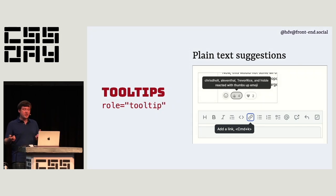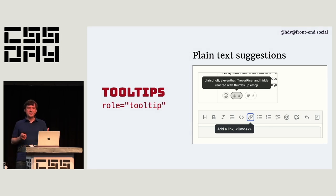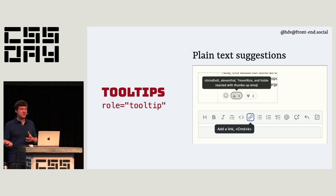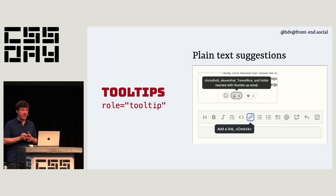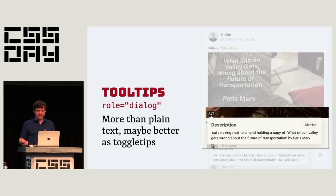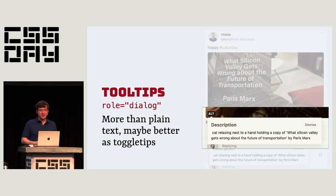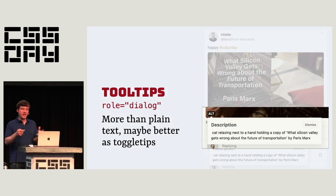The fourth option is tooltip. The most basic tooltip is what happens when you add a title attribute to an element — though that's controversial because it doesn't work with keyboard-only navigation. You can build your own that works with keyboards. If it has plain text with no headings, links, or complex content, you can use role='tooltip'. When it becomes more complex — like an alternative text dialog on social media with a heading, a button, and some text — it makes more sense to use a dialog role. So tooltip is for plain text only; dialog is for when it gets more involved.